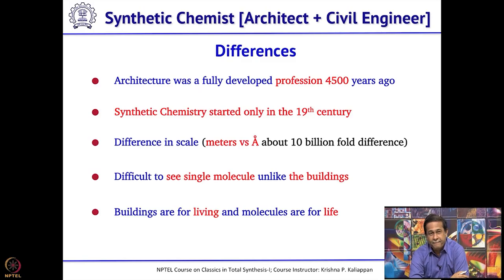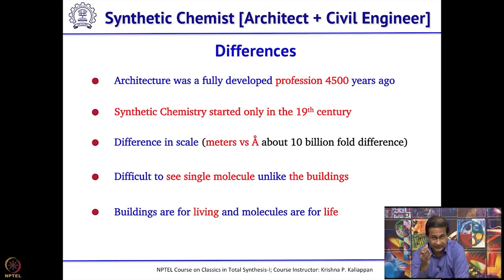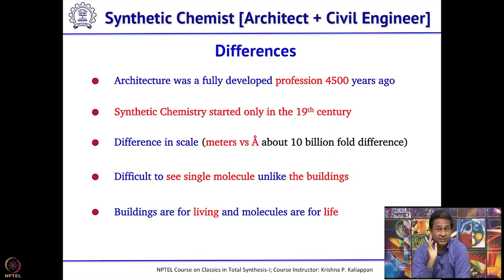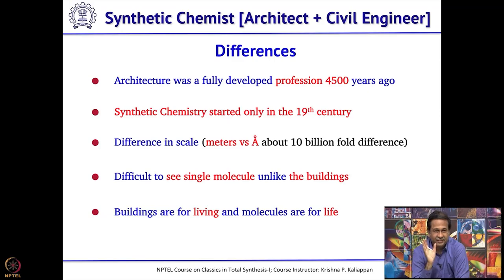You can see buildings with your eyes, and even a model of a building can be seen. Whereas for a synthetic chemist, it is very difficult to see a single molecule with the naked eye. Though there are now spectroscopic techniques, and a lot of efforts have gone in the last 2-3 decades to see a single molecule, for most of us it is still a far-away subject. Unlike architects and civil engineers who can see the buildings and visualize accordingly, that makes it much more difficult for synthetic chemists. And last but not least, when you construct buildings, buildings are meant for living, whereas when you make molecules, molecules are for life.